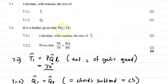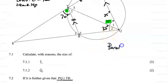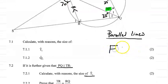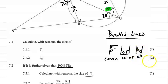It is further given that PQ is parallel to TR. Calculate with reasons the size of T2. Now, what do we know about parallel lines? If two lines are parallel, that gives rise to the acronym FUN — F for corresponding angles (F-shape), U for co-interior angles (U-shape), and N for alternate angles (Z or N shape).